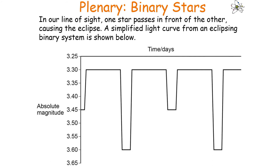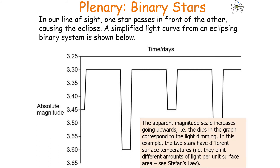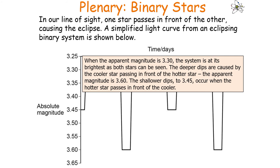A simplified light curve from an eclipsing binary system is shown. The apparent magnitude scale increases upwards, so dips in the graph correspond to the light dimming. In this example the two stars have different surface temperatures, as described by Stefan's law. When apparent magnitude is 3.30, the system is at its brightest as both stars are visible. The deeper dips at magnitude 3.60 are caused by the cooler star passing in front of the hotter star, and the shallower dips at 3.45 occur when the hotter star passes in front of the cooler one.